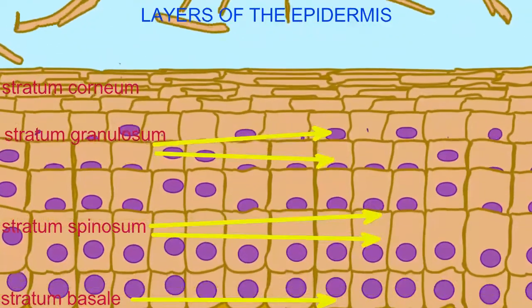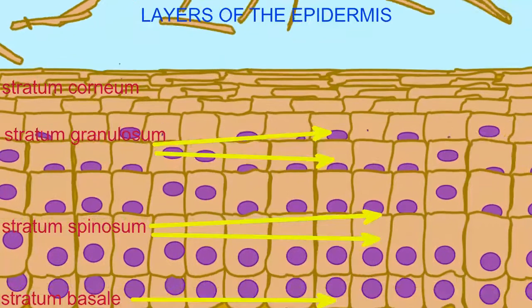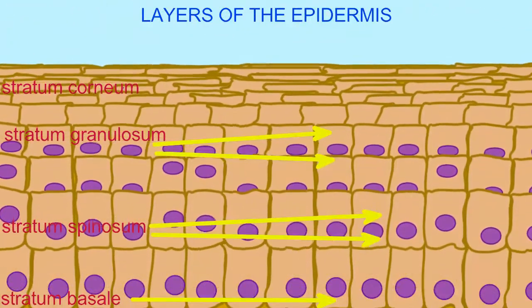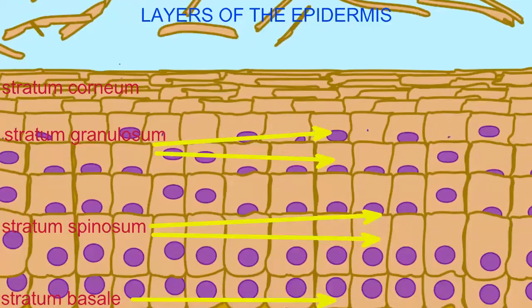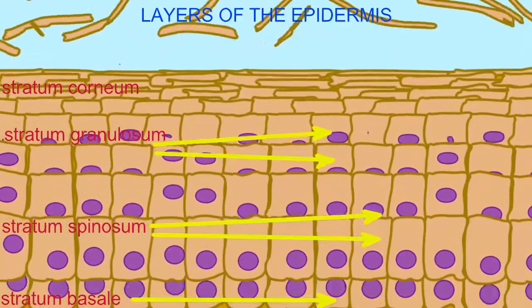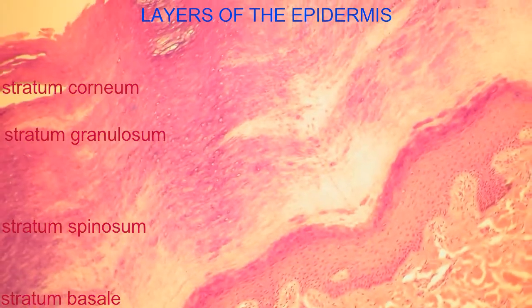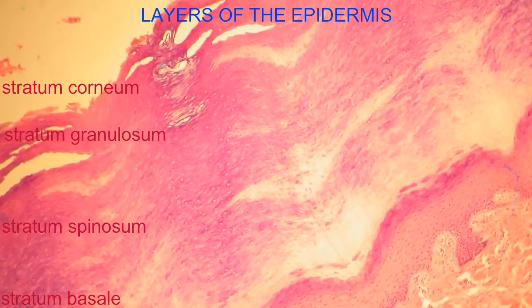About 50,000 cells are shed per minute from the human body. Thus, dust contains a large number of human epithelial cells. And humans may lose 18 kilograms of epithelial cells being shed from the stratum corneum over the course of their lifetime.